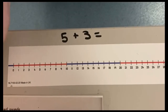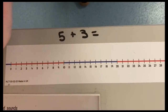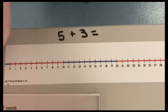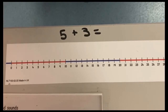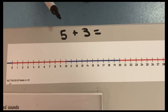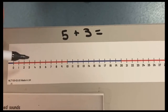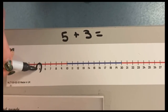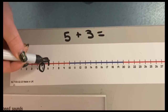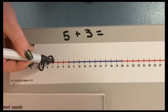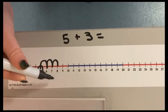For some of you, we might be wanting to move on from adding one, so we're going to look at adding single digit numbers using our number line. We're going to start with five plus three. We find the number five and we are adding three, so we take three jumps: one, two, three. The total of five and three is eight.